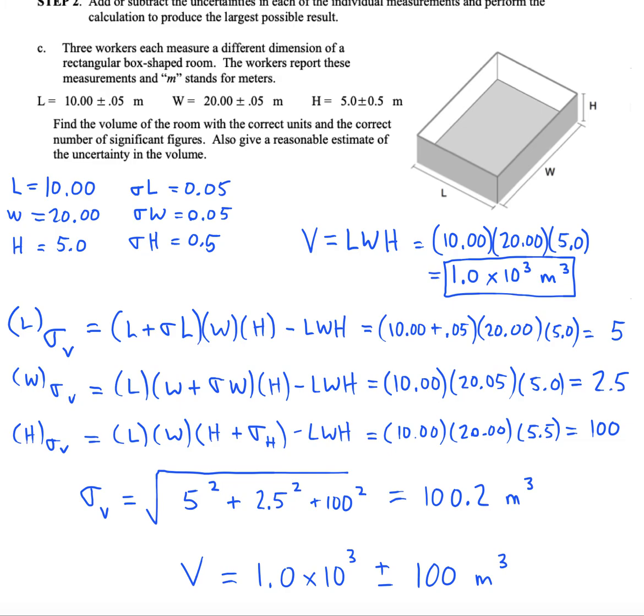Now this was just a basic rudimentary estimate of the problem. It works well because this is a box, but for more complicated mathematical functions, we would want to use a different approach involving partial derivatives. So our function was V equals LWH.